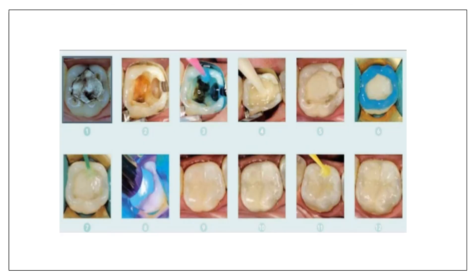This is another example of the sandwich technique: preparation is done, preconditioning is applied, GIC is placed and allowed to set, the surface is etched, enamel bonding agent is applied, and composite resin is applied in increments. This was the initial state and after doing the sandwich technique, this is how it looks.